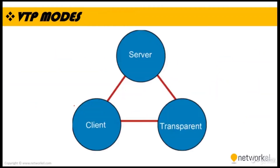Let's go ahead with the VTP modes. We have 3 modes: Server, Client, and Transparent. A switch in Server mode creates, modifies, and deletes VLANs and specifies other configuration parameters such as VTP version and VTP pruning. A switch in Transparent mode just forwards VTP advertisements and does not participate in VTP.